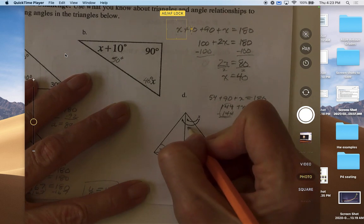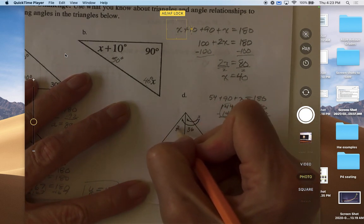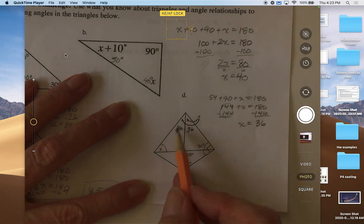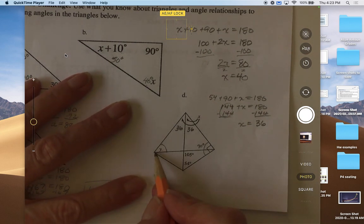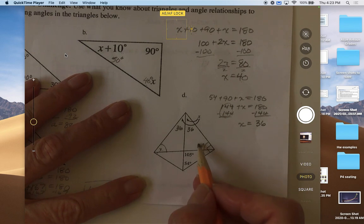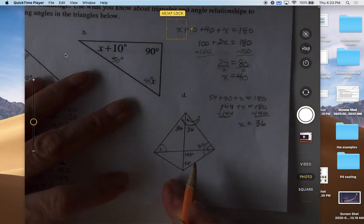So now we know that x is 36, and this other angle is going to be 36. So how can we find y? Well, we need to know the measure of this angle to find y.